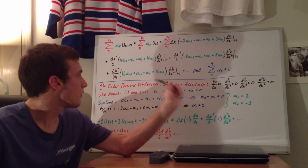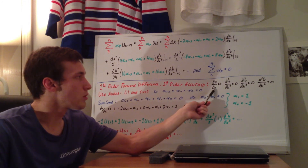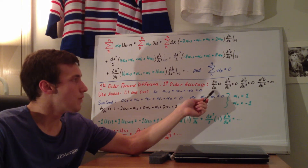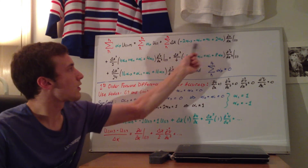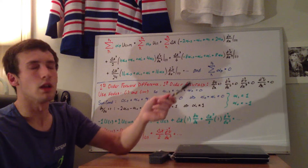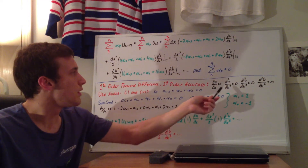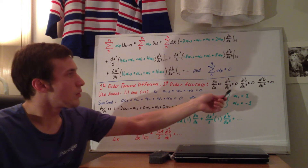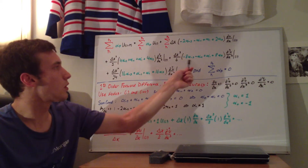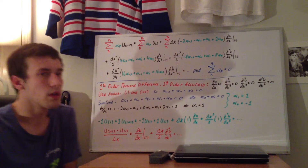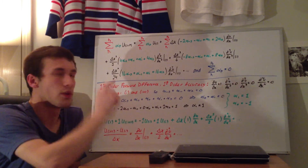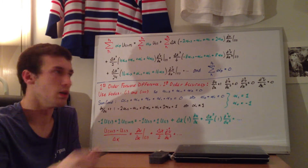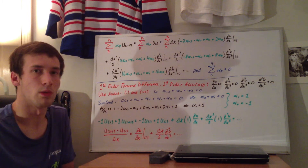We're looking for the first order derivative, du/dx. We set the coefficient for du/dx equal to 1, as I discussed in the last video. The coefficients for the second, third, and fourth order derivative terms are all zero — you don't need those for this case, but I'll explain why you would need them for higher order methods or more points.